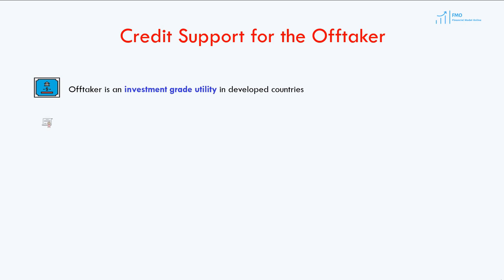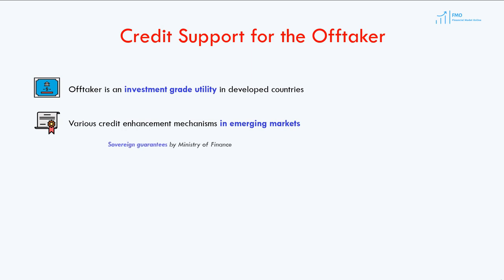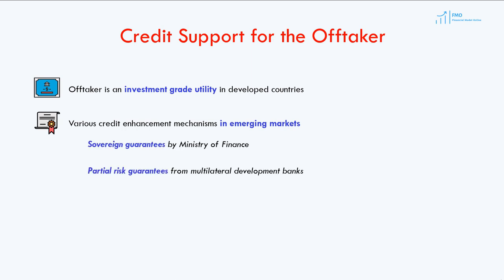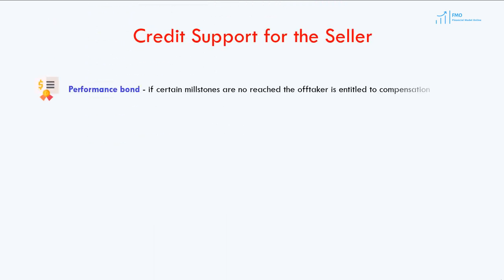For the off-taker in emerging markets, various credit-enhancing mechanisms may be available, such as sovereign guarantees from the government, partial risk guarantees, and political risk insurance. The energy seller is required to post a performance bond to enhance its creditworthiness, which comes, typically, in the form of letters of credit or bank guarantees.